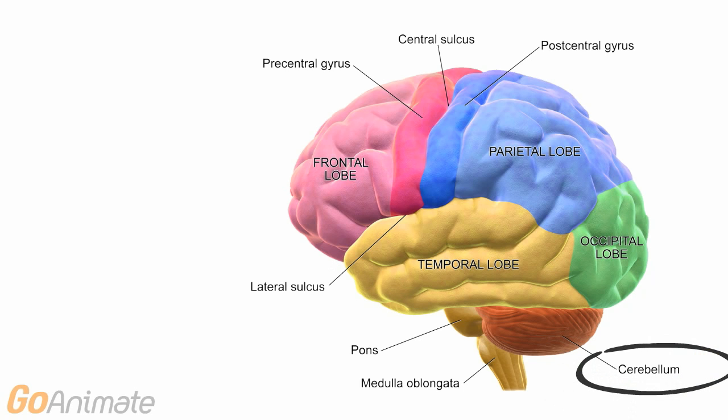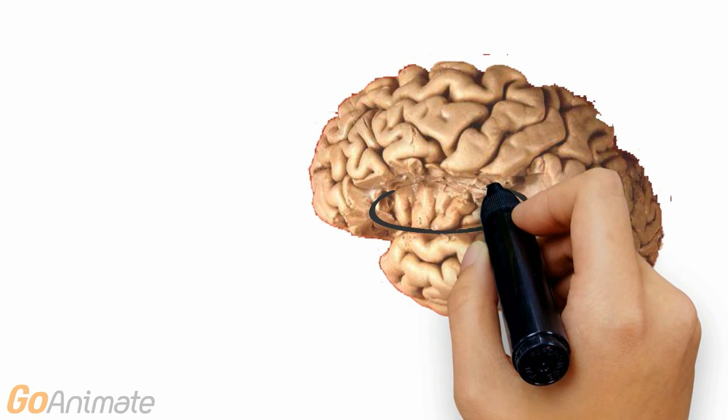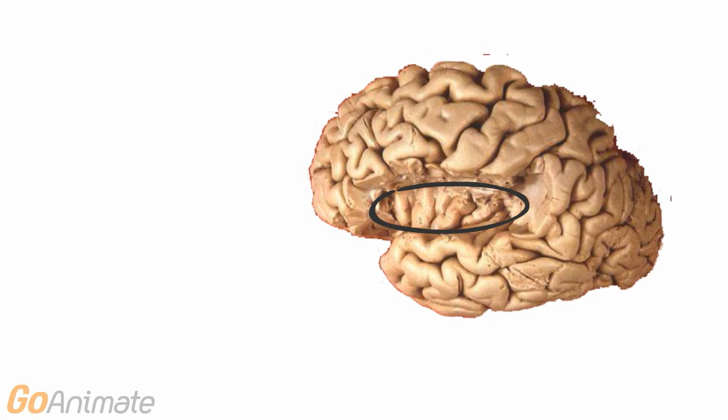The cerebellum processes fine motor movements, coordination and proprioception, which is the position of joints in space. The insula lies deep in the lateral sulcus and processes information for consciousness, motor control, homeostasis and emotions.